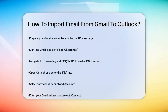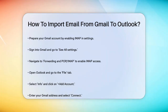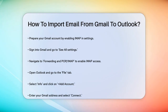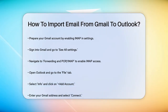First, you need to prepare your Gmail account. You have to enable IMAP in your Gmail settings. To do this, sign into your Gmail account, click on the account initials, and select See All Settings. In the Settings window, go to Forwarding and POP/IMAP and enable IMAP access.